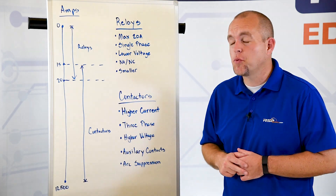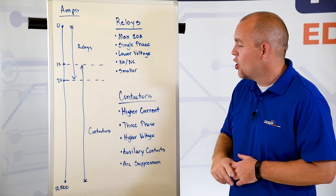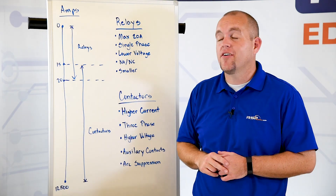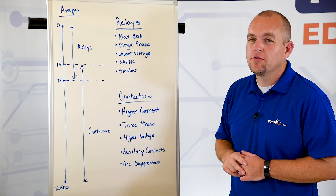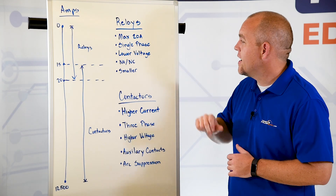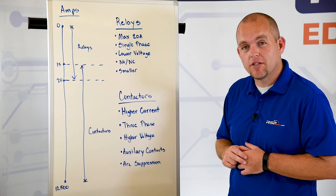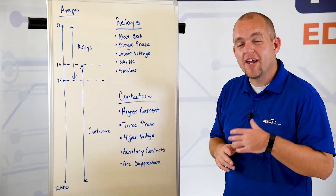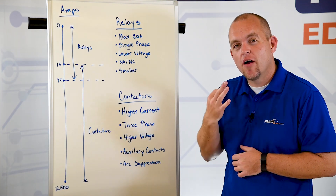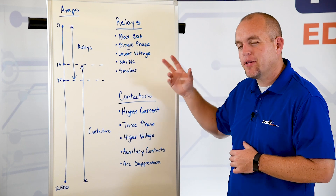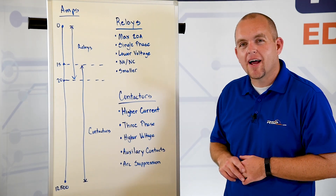Let's quickly look at the comparison between the two. With relays, we have a lower current maximum of 20 amps, whereas contactors can run all the way up to 12,500 amps. Relays are typically used in single phase applications, whereas contactors are more commonly used in three phase applications. Relays are commonly used in lower voltage situations, where contactors are more likely to be used in higher voltage situations. Relays give us both a normally open and normally closed contact, where contactors give us three sets of normally open contacts. Relays are typically much smaller than contactors, and some contactors also offer arc suppression in higher voltage situations.